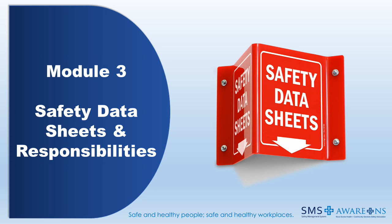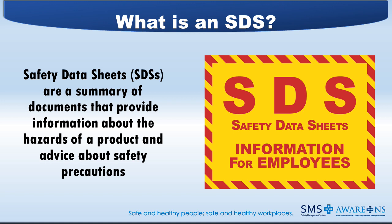Module 3 will cover Safety Data Sheets and Responsibilities. Safety Data Sheets, or an SDS, are a summary of documents that provide information about the hazards of a product and advice about safety precautions. An SDS was formally called Material Safety Data Sheets, or an MSDS.